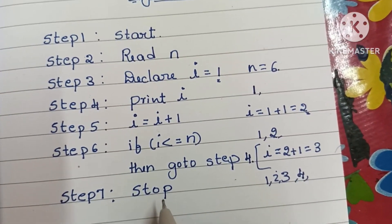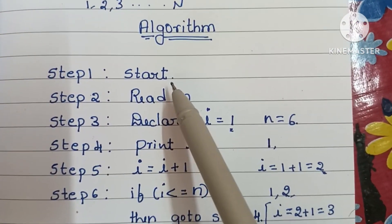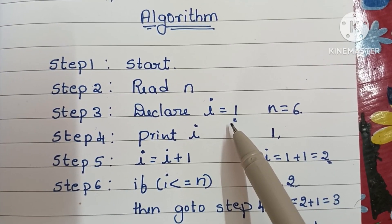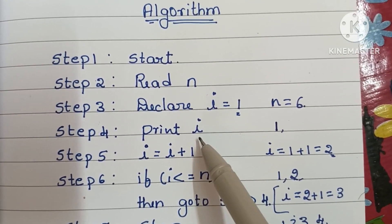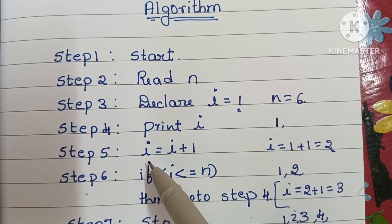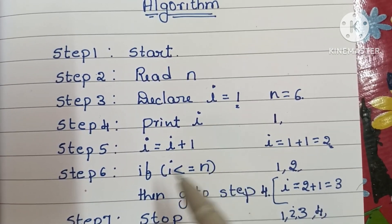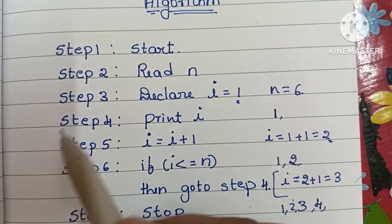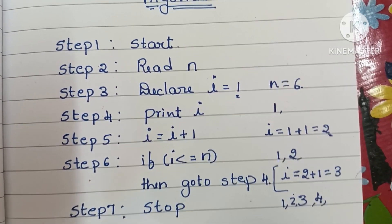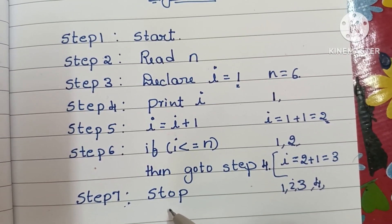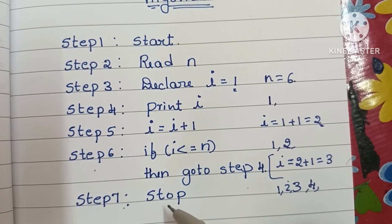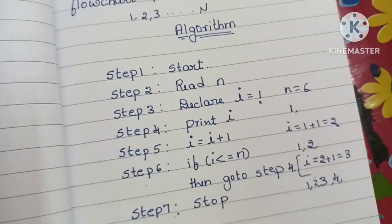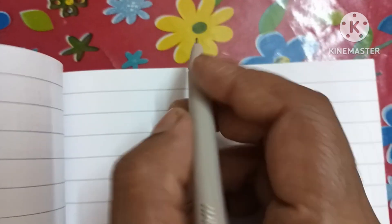We stop the algorithm using a STOP statement. To recap: step one — START; step two — read N; step three — declare i = 1; step four — print i; step five — i = i + 1; step six — check if i ≤ N, if true go to step four, else go to step seven — STOP. The algorithm starts with START and ends with STOP.